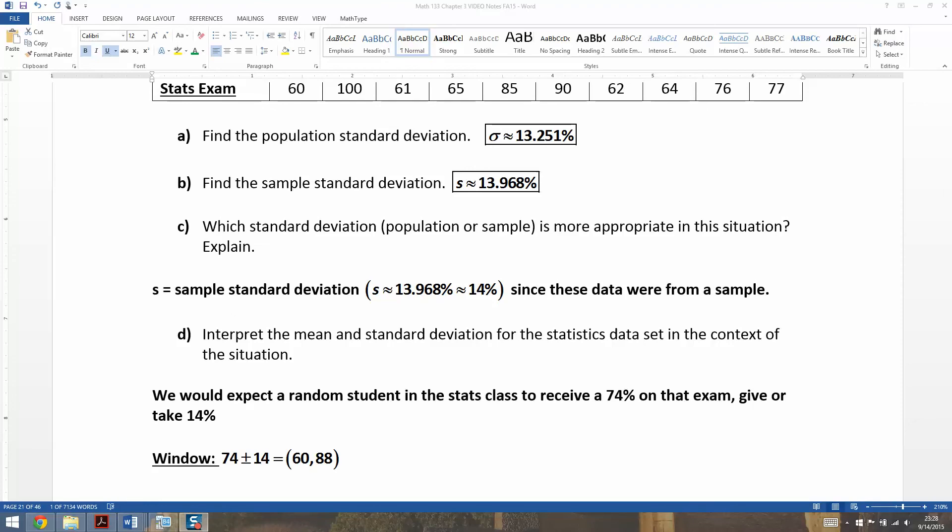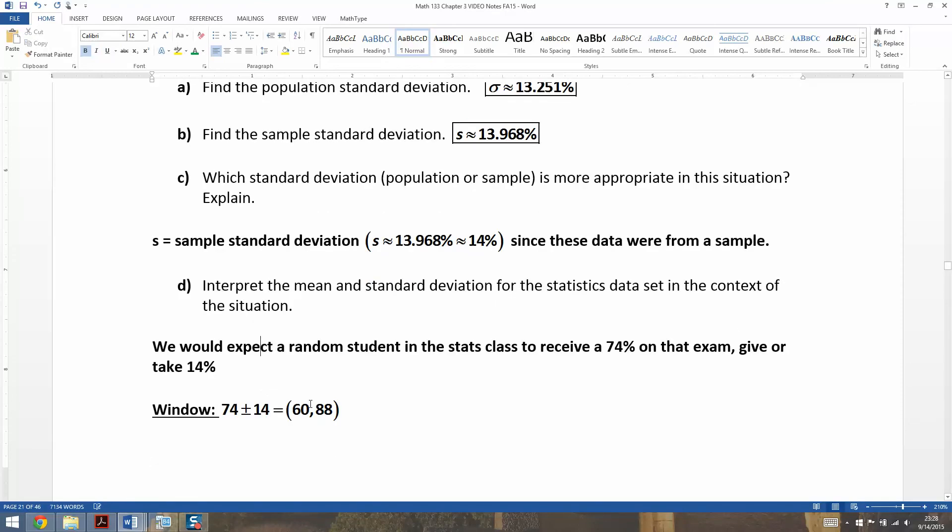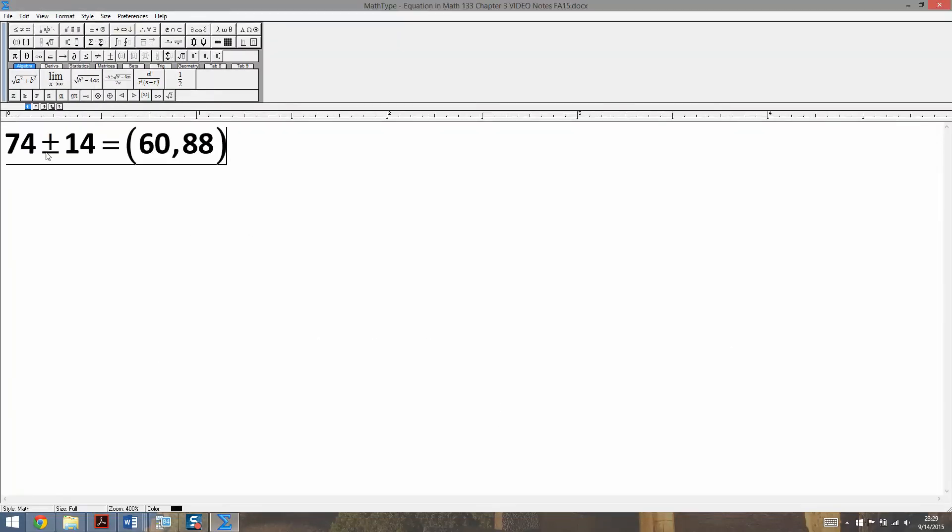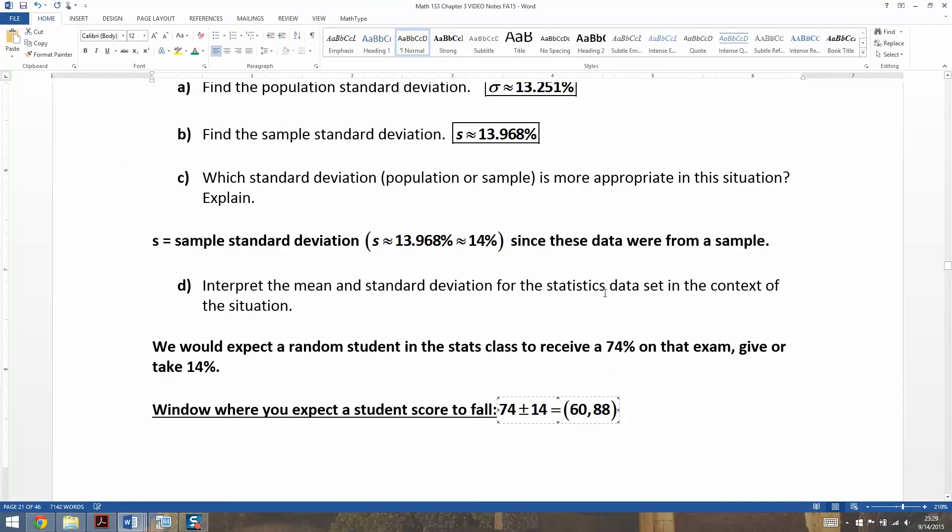All right. So let me type that up there. We would expect a random student in the stats class to receive a 74% on that exam, give or take 14%. Now, realize what you're making, you're making a window where you expect a student score to fall. And what that would be would be 74 plus or minus 14. So if you take 74 minus 14, that gets you 60, 74 plus 14, that gets you 88. So you think that they're going to fall somewhere between those two scores.